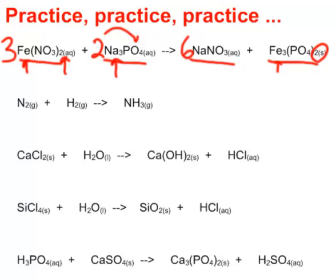Second equation: nitrogen gas combined with hydrogen gas to make ammonia gas. The problem — NH3 has three hydrogens, but H2 has two. Twos and threes can be balanced using six: put a 2 in front of NH3 and a 3 in front of H2. Two times three is six hydrogens, and three times two is six hydrogens — they match. Putting 2 in front of ammonia gives two nitrogens, which is fine because N2 is a diatomic molecule.